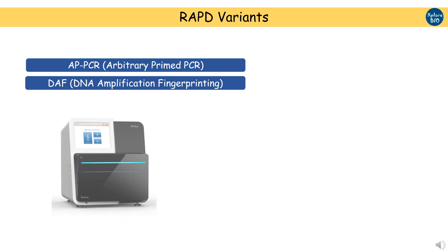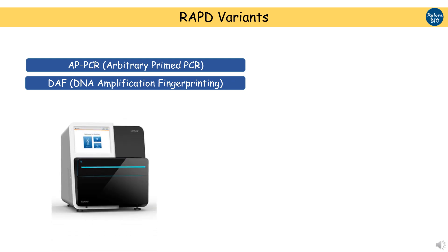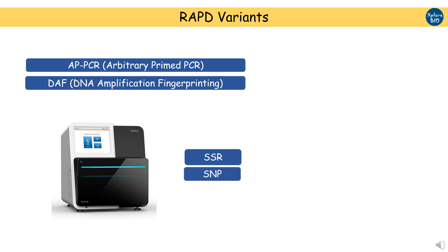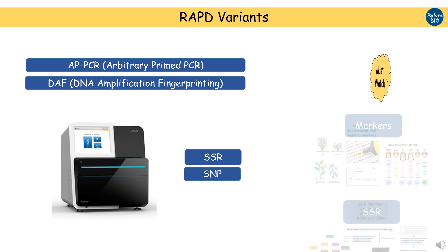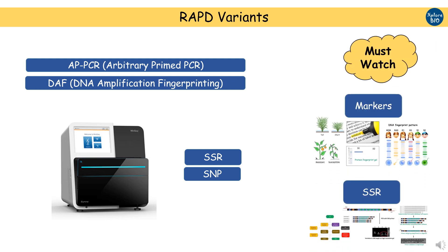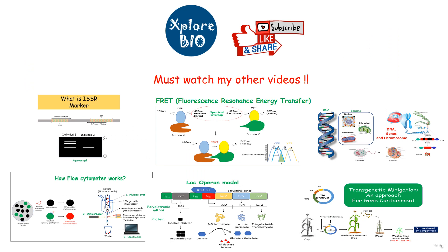Nowadays, with the advent of next generation sequencing technologies, a lot of sequence information is generated in different species, and sequence-specific co-dominant markers like SSRs and SNPs have replaced dominant markers. To know more about the types of markers and SSRs, watch the related videos.